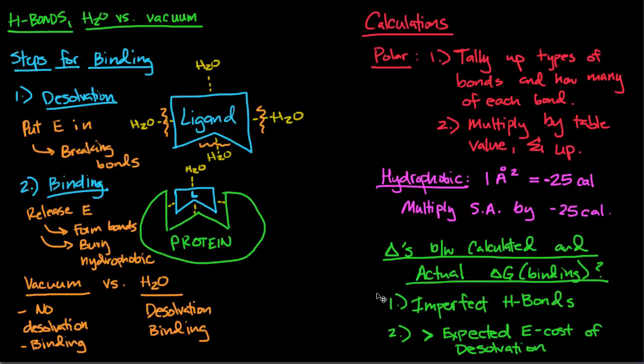And then number two might also be an expected—a higher than expected energy cost for desolvation. So let's say this ligand is more strongly bound to the solvent than we expect. You would have to put a greater amount of energy in. Because of that, the delta G, the energy released upon binding, is actually going to be less than what you calculated. Remember your calculations are for the perfect scenario—it's for the ideal scenario. The real world is often not as good as the ideal world. So that about sums it for H bonds and H2O versus a vacuum.